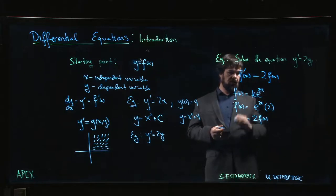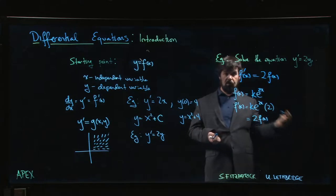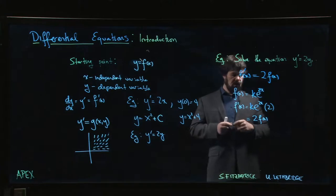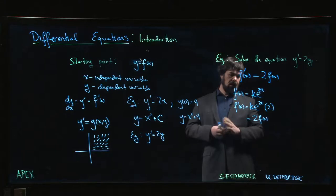And then this whole thing here is still f(x) times 2, so we still get 2f(x). Well, there's a solution. Turns out this is essentially the general solution.